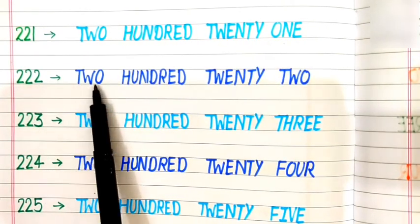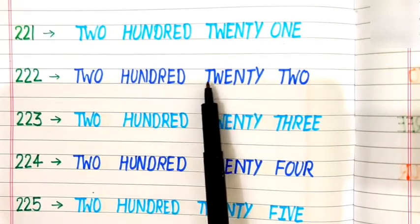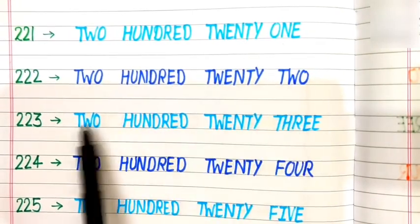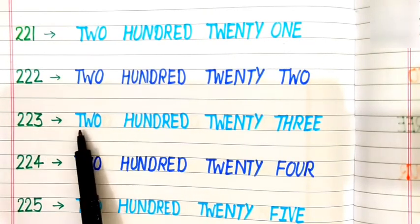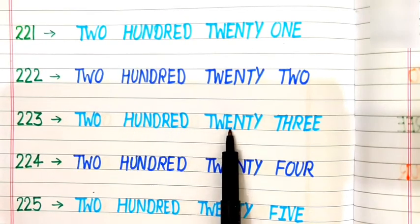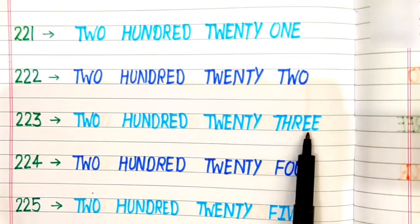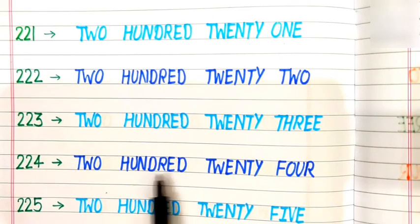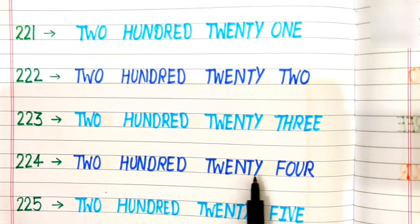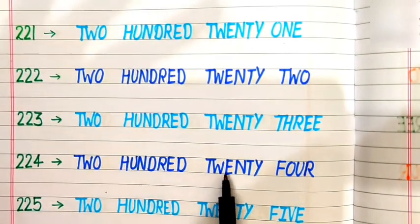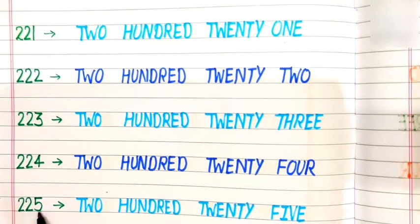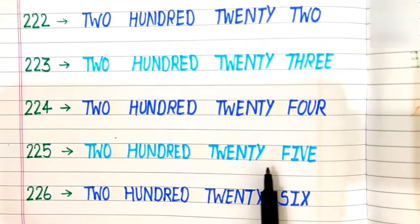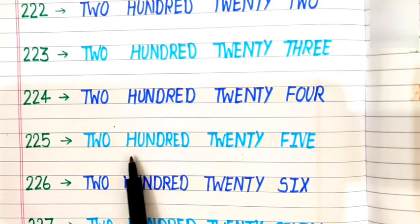222: T-W-O H-U-N-D-R-E-D T-W-E-N-T-Y T-W-O. 222. 223: T-W-O H-U-N-D-R-E-D T-W-E-N-T-Y T-H-R-E-E. 223. 224: T-W-O H-U-N-D-R-E-D T-W-E-N-T-Y F-O-U-R. 224.